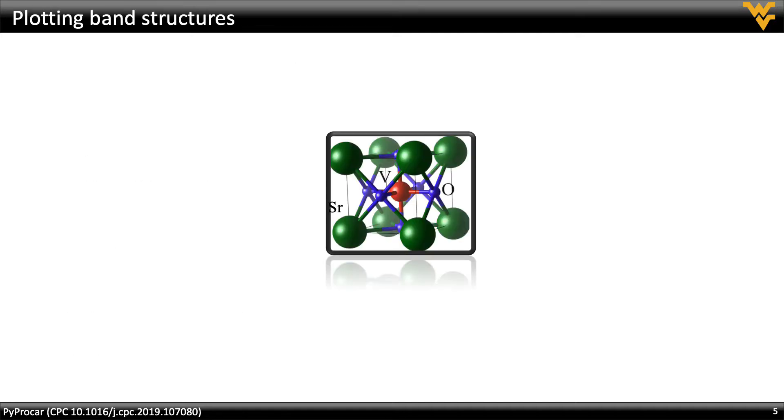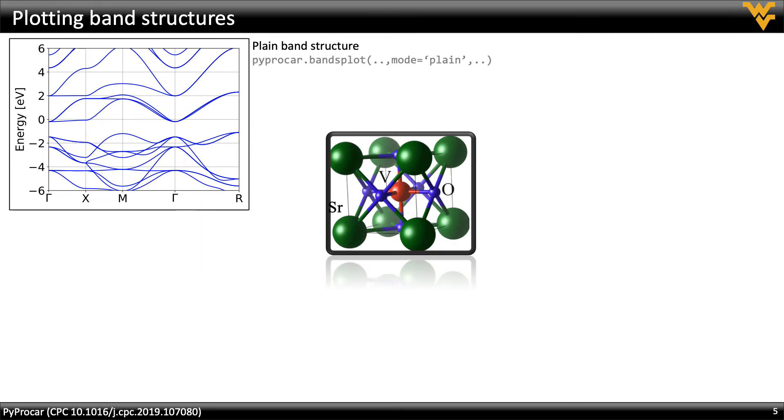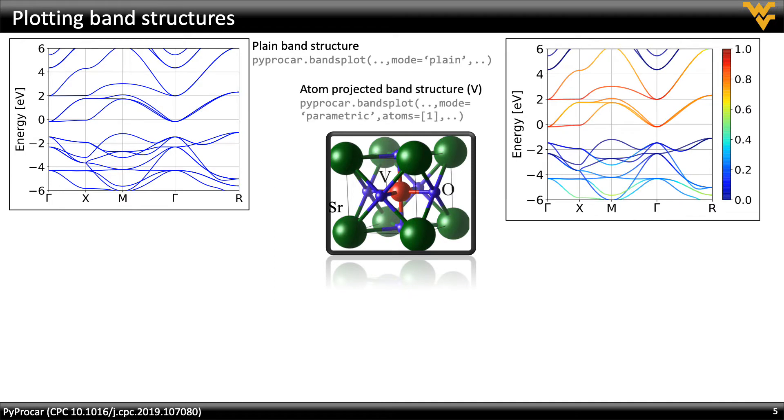One of the main features of PyProCar is band structure plotting. There are a few modes for plotting bands as shown here for the materials from humanity. The plane mode is the most basic where only the band energy is plotted along a K path. Next we have the atom projected mode as displayed here for the vanadium atom to see the contribution from a selected atom or a list of atoms onto the band structure.